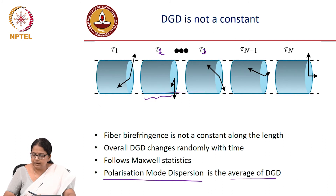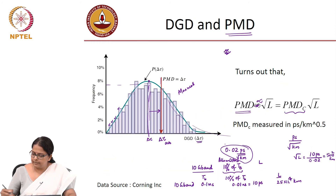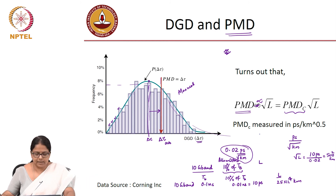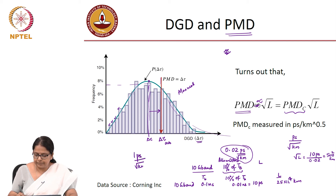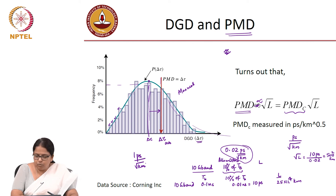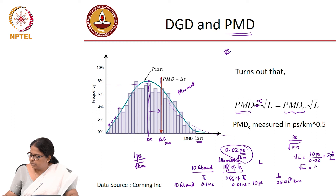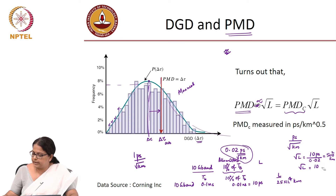By contrast, the fiber that was commercially used and laid over the years had a PMD of 1 picosecond per square root kilometer. With this coefficient and a 10 ps budget, sqrt(L) equals 10, so the maximum transmittable length is only 100 kilometers.